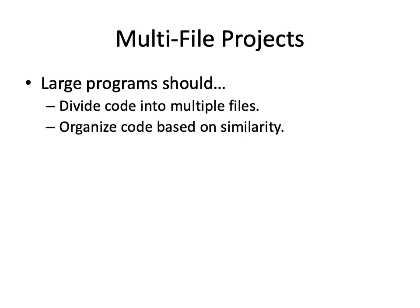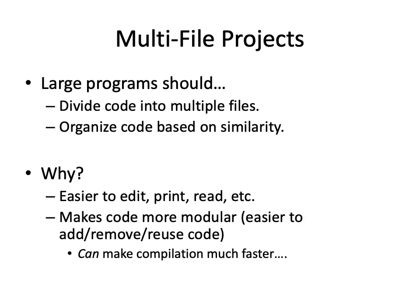If you've got a bunch of things having to do with time, stick it all in a time library. If you've got stuff dealing with file input and output, stick it all in another file. Organize based on similarity. It's easier to print, edit, and read. It's easier to share your code, take parts out, or save backups. It can also make compilation a lot faster — rather than recompiling thousands of lines, you only recompile the file you changed.